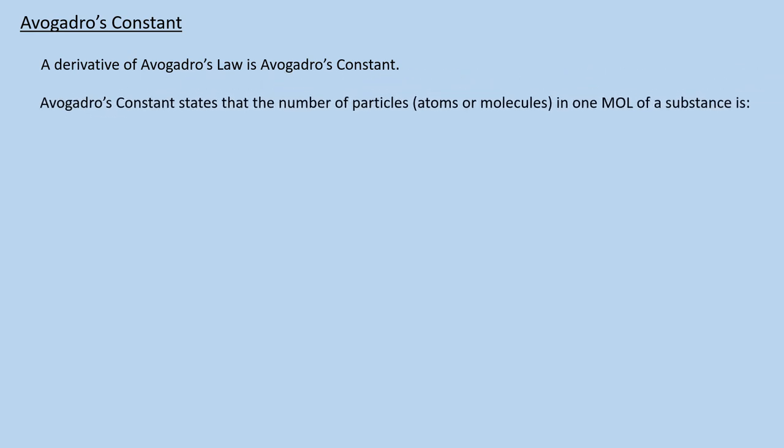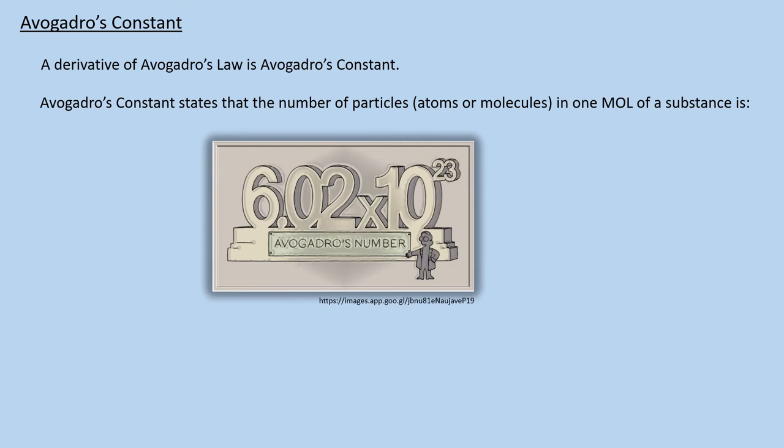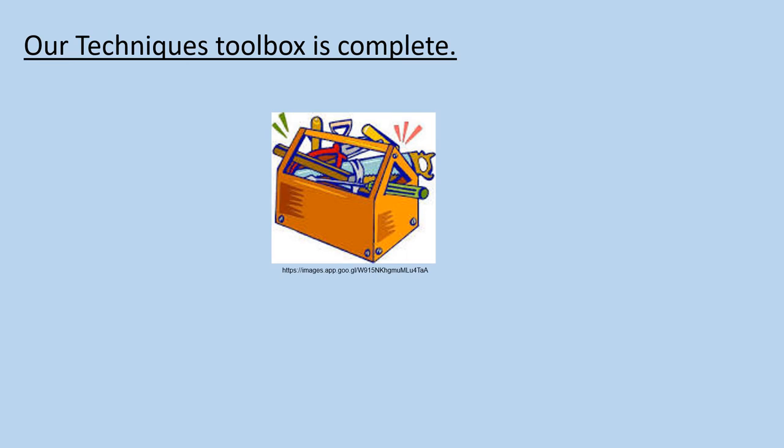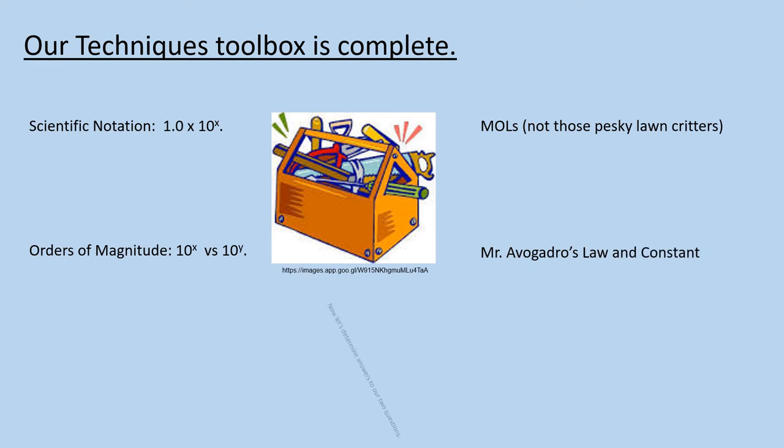So why have we covered all of this history? Because a derivative of Avogadro's law is Avogadro's constant. He didn't devise this number, but it follows from his law. We discovered what a mole is in the prior section. Avogadro's constant states that the number of particles, atoms or molecules, in one mole of any substance is 6.02214129 times 10 to the 23rd. This is one of the most important numbers in chemistry, and the key to answering our second question, how many atoms are in a grain of sand? Our toolkit is now complete. We've covered scientific notation, orders of magnitude, moles, and Mr. Avogadro. Let's now answer our two questions.